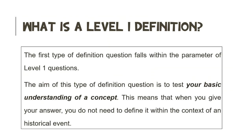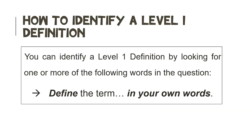When you are writing your NSC examination you are going to have to be able to distinguish between the two, and that is what we are going to practice today. Let's start by taking a look at the first category: a level 1 definition question. The aim of this type of definition question is to test your basic understanding of a concept. This means that when you give your answer you don't need to define it within the context of the historical event. All that you need to do is give a general definition of the concept. The words in the question will look as follows: 'Define the term in your own words.' When you see these words in the question then you know that you are dealing with a level 1 definition question.